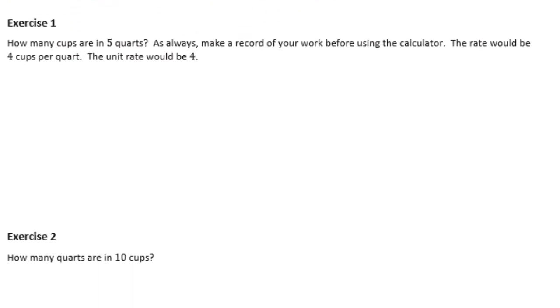Exercise 1. How many cups are in 5 quarts? As always, make a record of your work before using the calculator. The rate would be 4 cups per quart. The unit rate would be 4. So how many cups are in 5 quarts? So if we have 5 quarts, and there are 4 cups per quart, we can multiply it by 4, and we'll get 20 cups in 5 quarts.